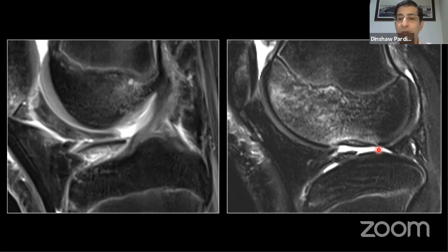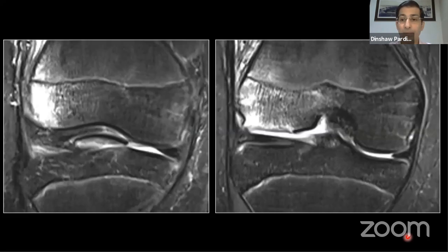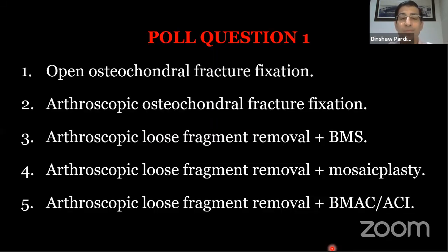The fragment is from the lateral femoral condyle — it's an acute lesion, just two days old, with bone edema there. On further MRI cuts, we can confirm that piece has come from the lateral femoral condyle. Poll question one: what would you do for this patient? Options include open osteochondral fracture fixation, arthroscopic fixation, arthroscopic loose fragment removal with bone marrow stimulation, mosaicplasty, or loose fragment removal with autologous chondrocyte implantation.